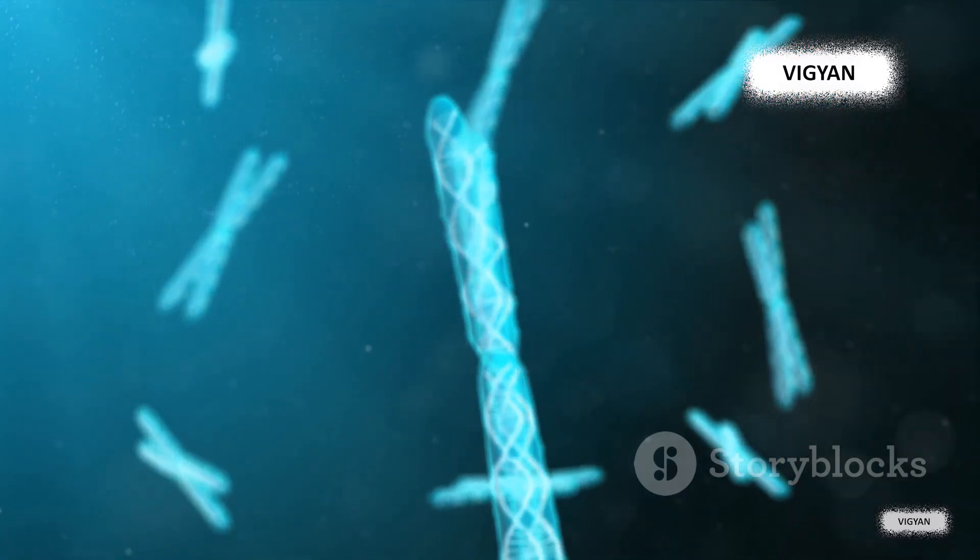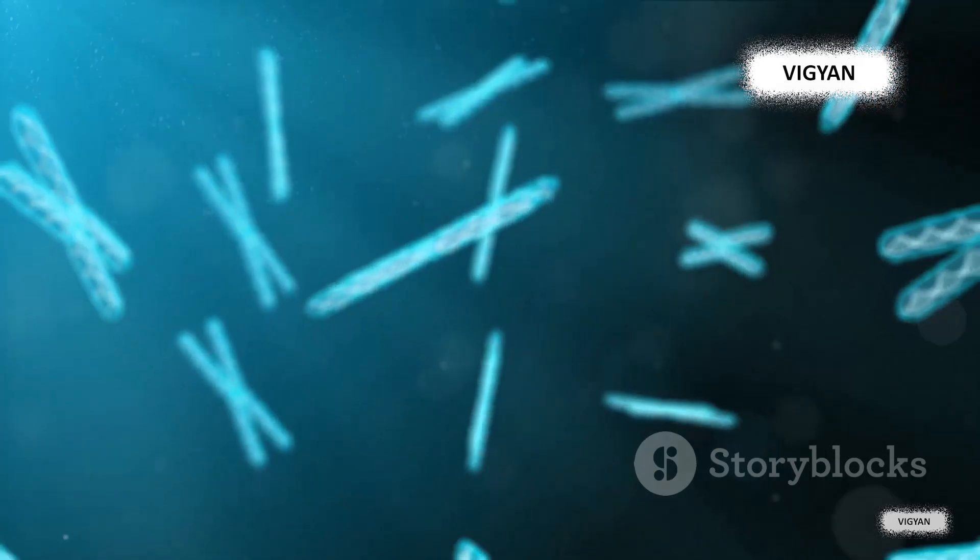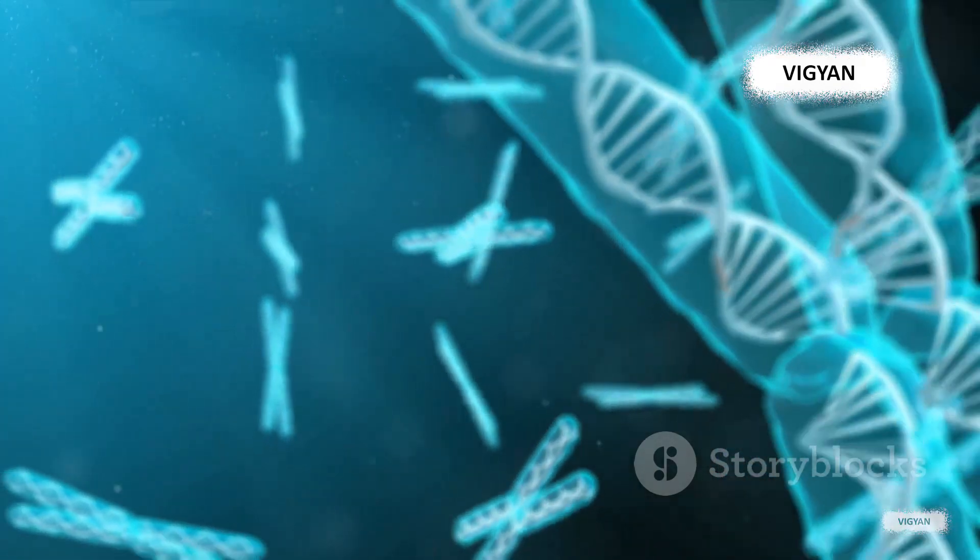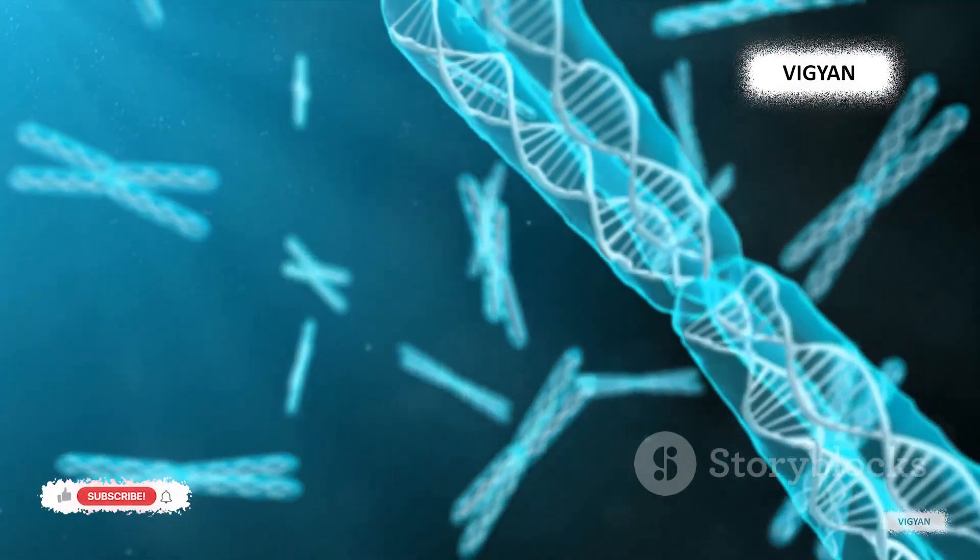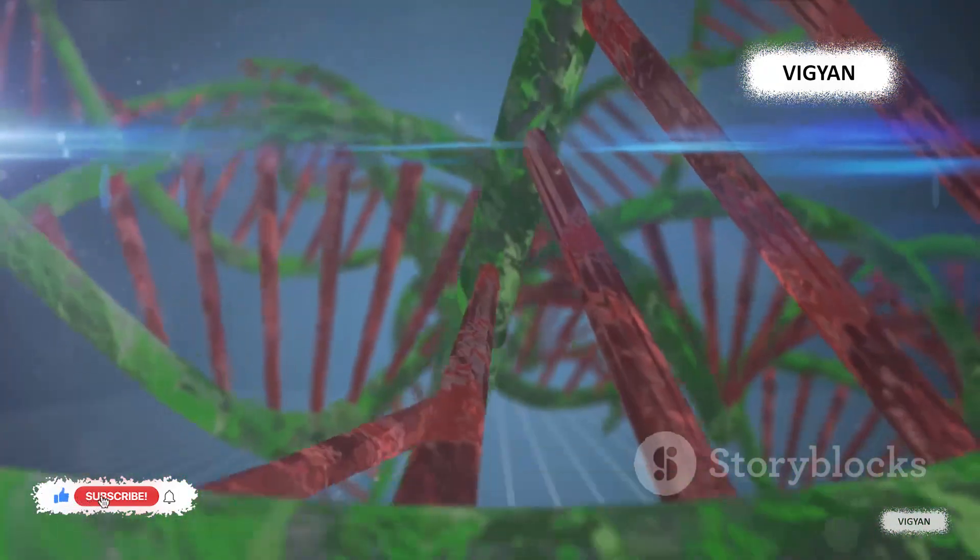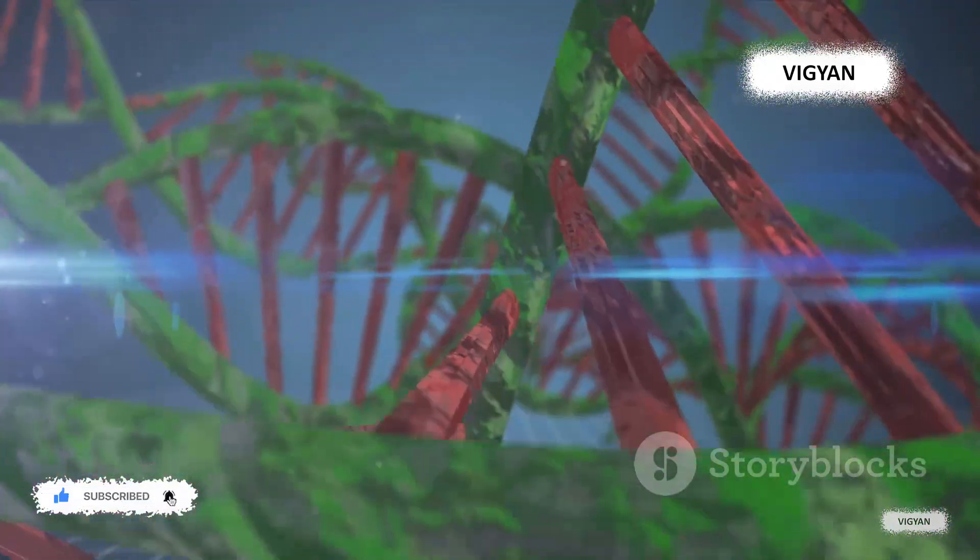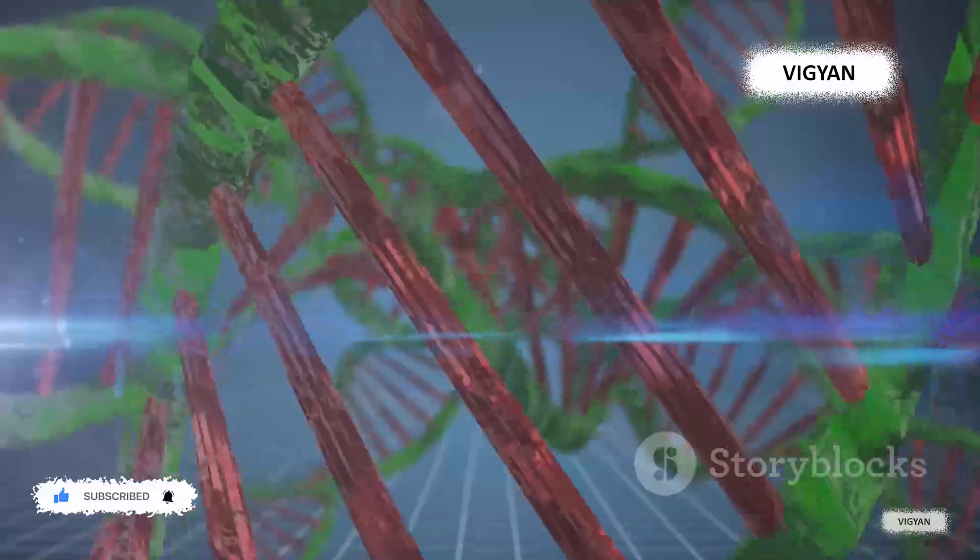Imagine a regular computer. At its heart is a chip, a tiny piece of silicon that processes information and performs calculations. Now replace that chip with a strand of DNA or a protein molecule. These biological molecules, just like the chip, can store and process information. They can be programmed to perform specific tasks, much like writing a software program for a computer.